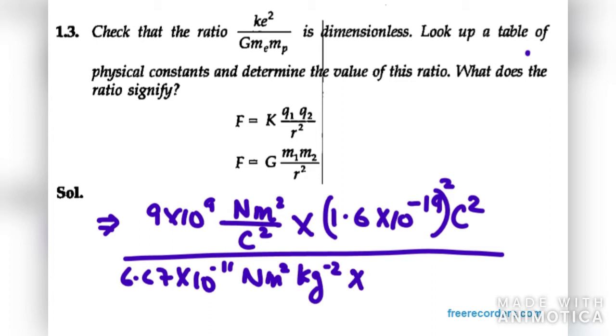Then we have ME value. ME is 9.1 into 10 raised to power minus 31 in kg. And then we have MP. Value for MP is 1.67 into 10 raised to power minus 27, again in kg because it is mass.